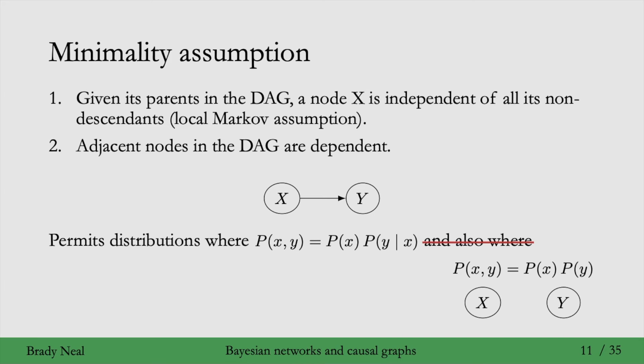So if we were just using the local Markov assumption, then we could represent this fully factorized distribution using either the graph where it's x and y and there's no edge, or using the graph where it's x and y and they're connected with an edge. Both of those would be graphs that this distribution is Markov with respect to. This distribution satisfies the local Markov assumption with respect to both of those graphs.